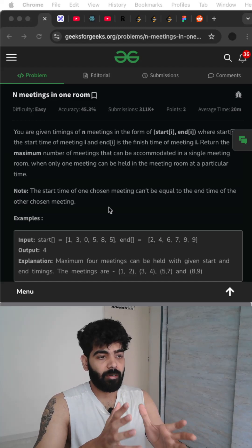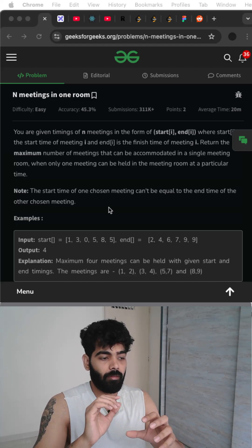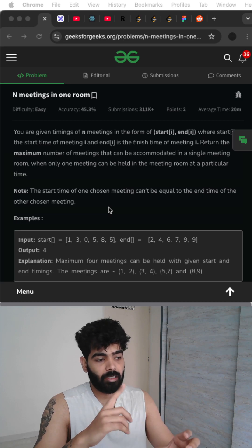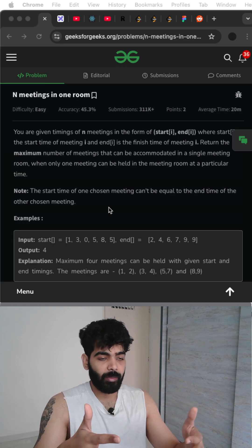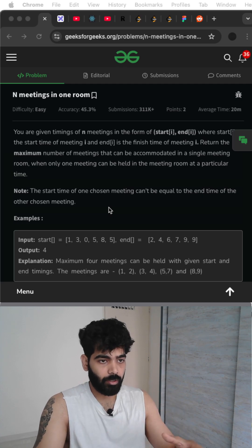Hey everyone, in this video we'll be solving the N meetings in one room problem. So basically we have N meetings with start and end times and basically one single room to attend them in. We need to maximize the number of meetings we can have by ordering them in such a way.